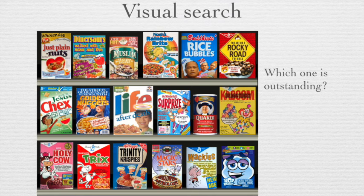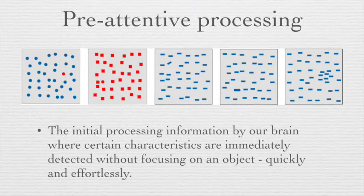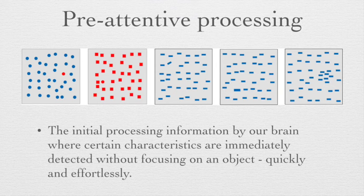There are two types of visual processing. The first is effortful acuity, which usually requires attention and operates slowly. The second is called pre-attentive processing. You can see, for example, a red cereal box that you can find very easily on a shelf because it stands out. Pre-attentive processing is the initial processing of information by our brain where certain characteristics are immediately detected without focusing on the object.